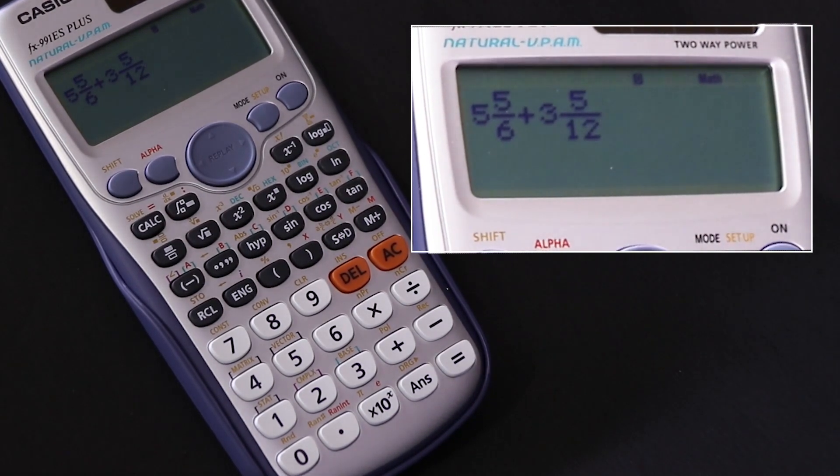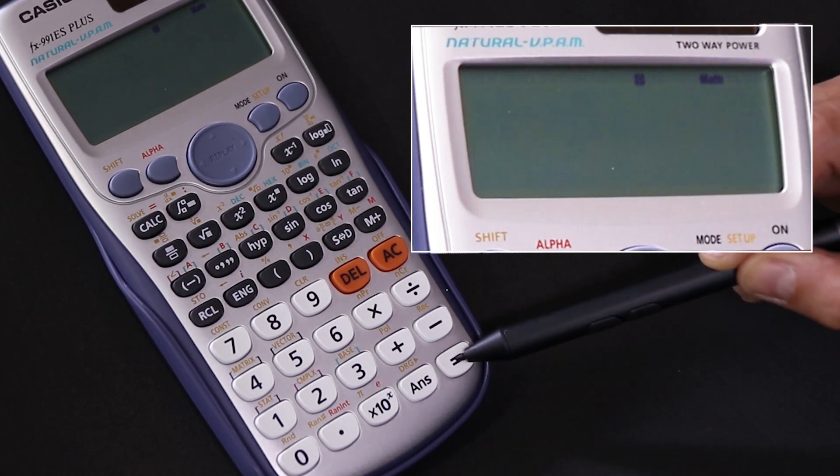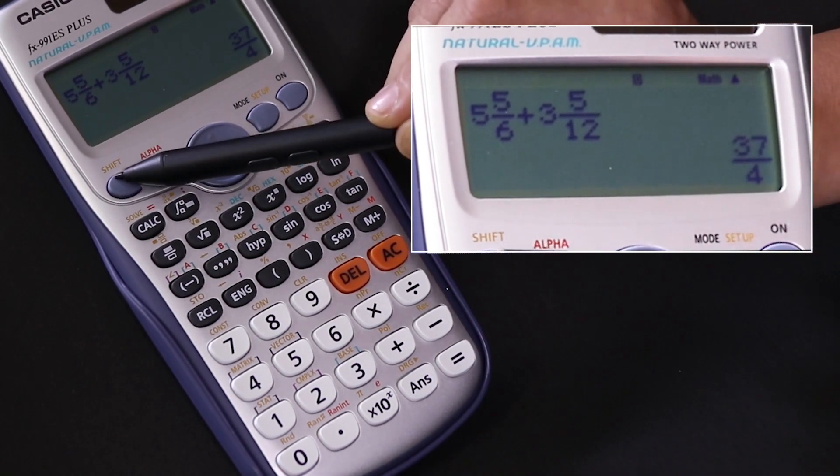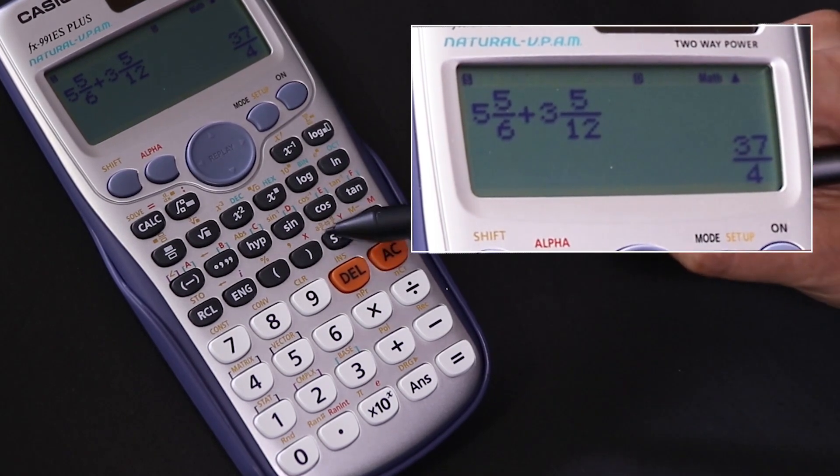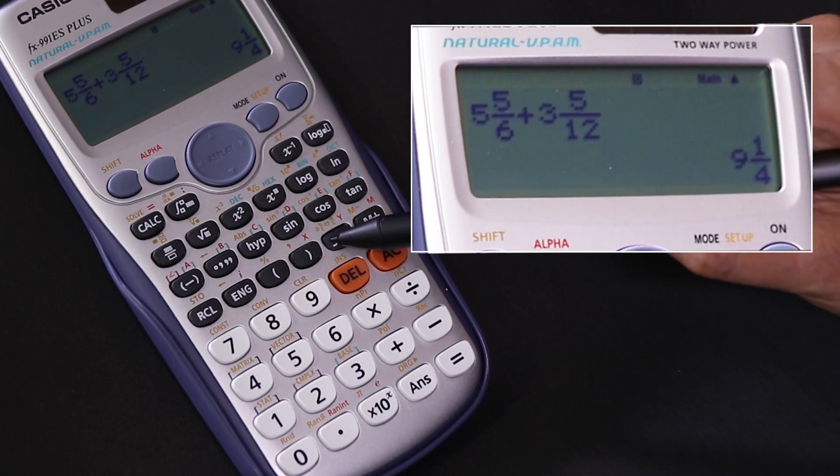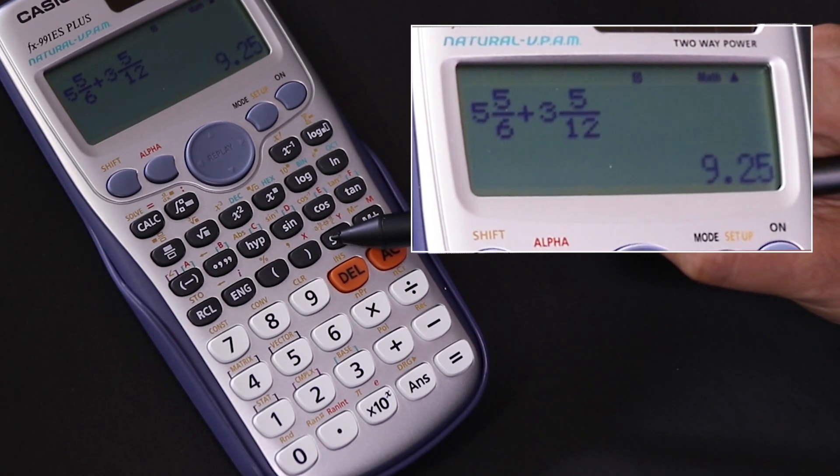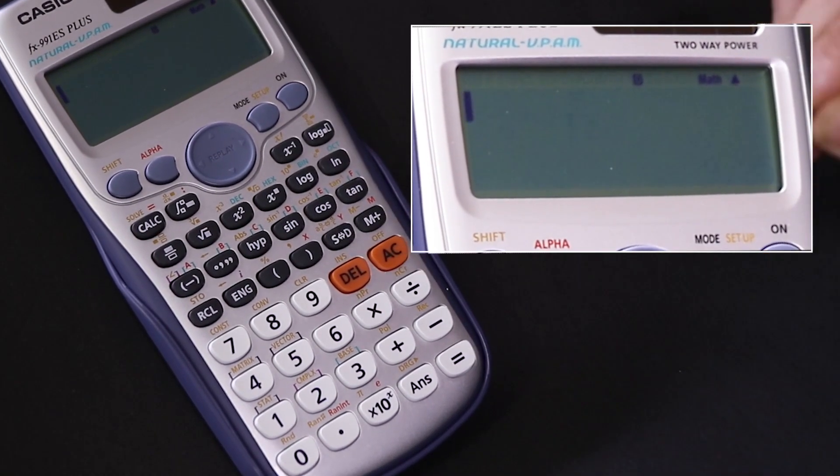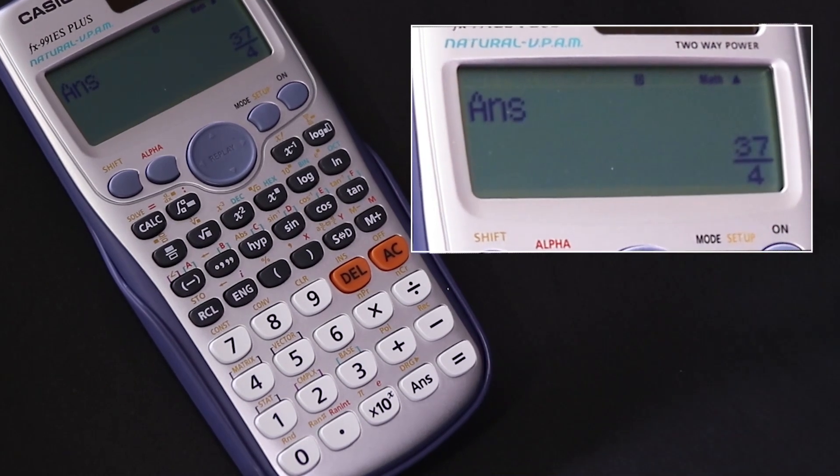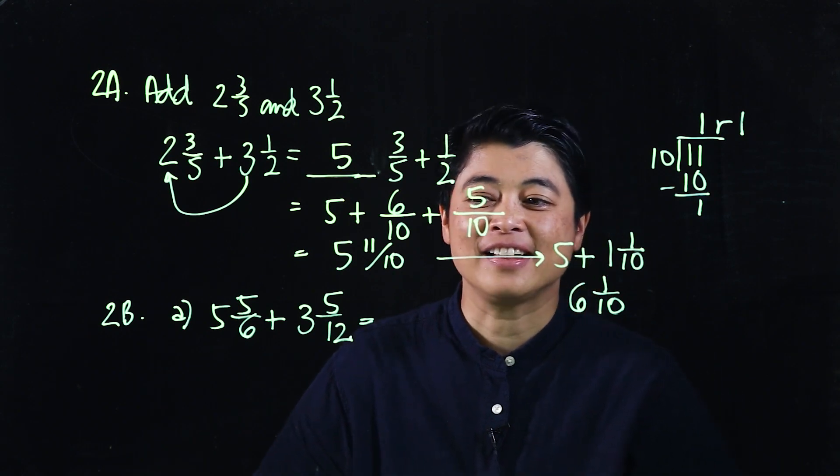The thing that we have to remember is if we put it in the calculator, it will give us an answer in the simplest form already. Shift divide gives us 9 and 1/4. So if it wants an answer as a mixed number, it's 9 and 1/4. If it wants an improper fraction, it would be shift SD—it's gone—oh, let's press equals: 37/4.